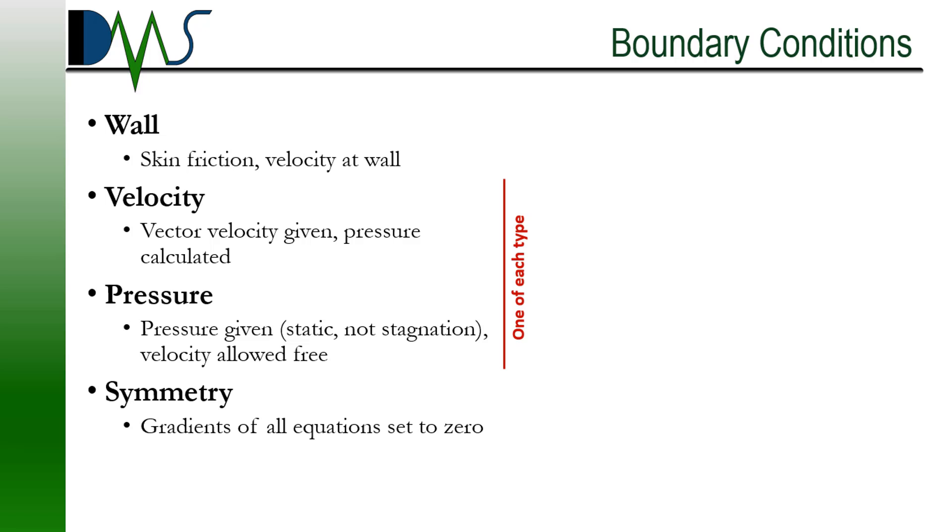We then also have pressure conditions. That can be a pressure inlet or a pressure outlet condition. Now in those cases, we're specifying the static pressure, not the stagnation pressure. So the velocity is allowed to freely vary in those cases. And then finally, we have symmetry conditions, where all the gradients are set to zero. One little hint I do want to say is for pretty much every CFD simulation, you need to have at least one boundary condition for velocity and one boundary condition for pressure. These two variables, velocity and pressure, are coupled in your equations. And so if you only specify a boundary condition for one of them, the other one is unconstrained. And that's going to lead to problems for your solution. So you always need to specify boundary conditions for both velocity and pressure in your simulation.